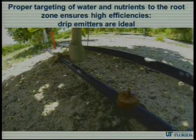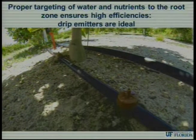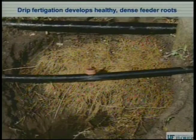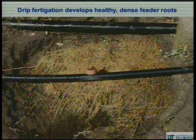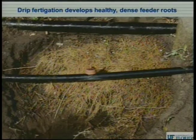Drip is an ideal system for targeting water and nutrients directly to the roots, creating the highest efficiencies, followed by properly directed microsprinklers. If you properly direct them to the root system, they also do a great job. This is the result you get with drip fertigation — the root system really loves it and it grows strongly and healthily around that dripper.